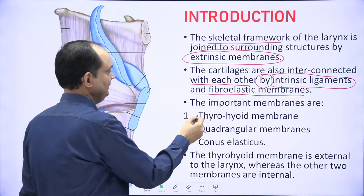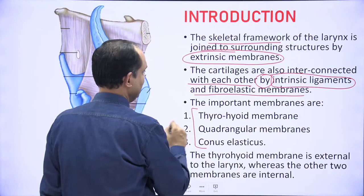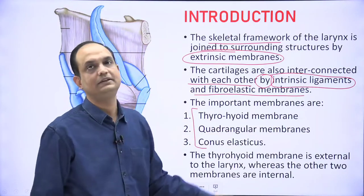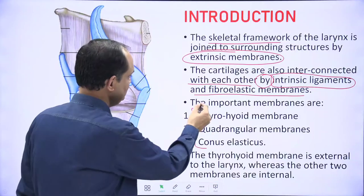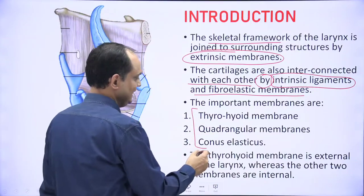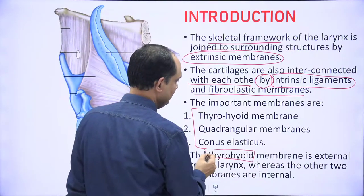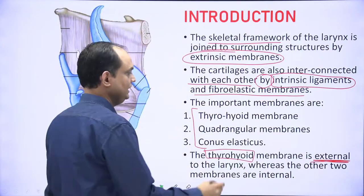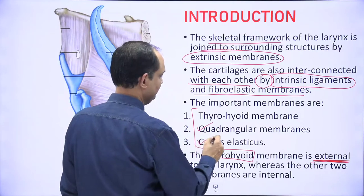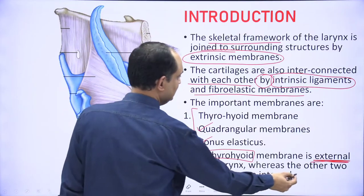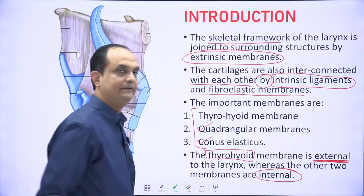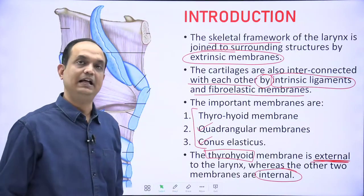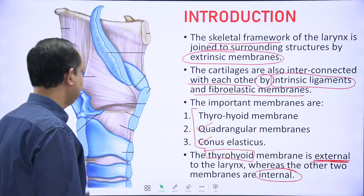The three membranes are: thyrohyoid membrane, quadrangular membrane, and conus elasticus. When you look at all three, the thyrohyoid membrane is the extrinsic or external membrane, while the remaining two — quadrangular membrane and conus elasticus — are internal or intrinsic membranes. They lie inside the laryngeal cavity.